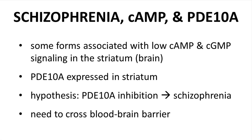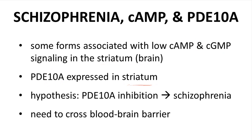Some forms of schizophrenia are associated with low cAMP and cGMP levels in the striatum of the brain. PDE subtype 10A is highly expressed in the striatum, so a reasonable hypothesis is that inhibition of PDE-10A will reduce symptoms of schizophrenia. Of course, any PDE-10A inhibitor will need to cross the blood-brain barrier, another indication that membrane permeability and avoidance of efflux transporters will be critical for such a drug.